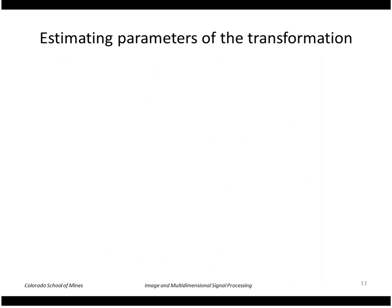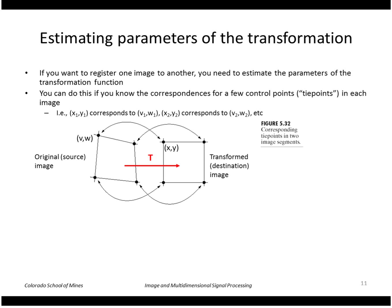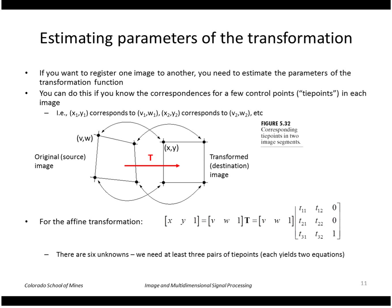How would you estimate those parameters? You can do that if you have a few control points or tie points. If you have two images you're trying to register, and you know that a point v, w in one image should match a point x, y in the other — and so on for several points — you have a set of corresponding points. How many do you need? There are six unknowns, and each point correspondence yields two equations — one for x and one for y. So you need at least three pairs of corresponding points to calculate the parameters of an affine transformation.